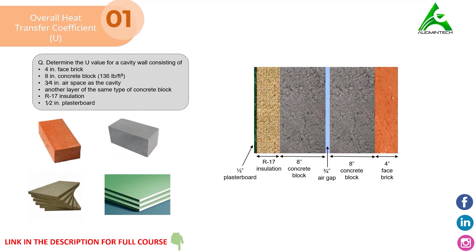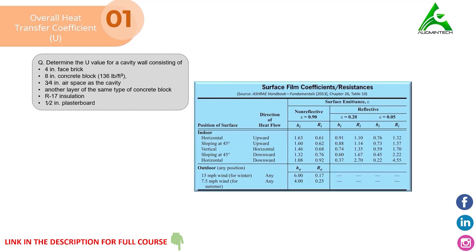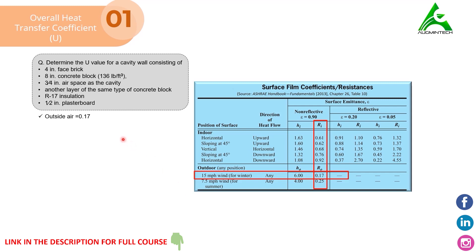Note that the right side of the wall is taken as outside the building and the left side is assumed to be inside. First, we'll find the R-Value of the outside air using the ASHRAE chart. In this chart, there are indoor and outdoor conditions. Because we are talking about the resistance of outside air, we select that row. We are considering winter conditions, and selecting the resistance column, these two intersect at the value of 0.17. So the resistance found for the outside air is 0.17.